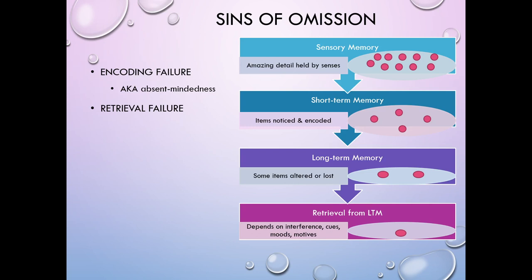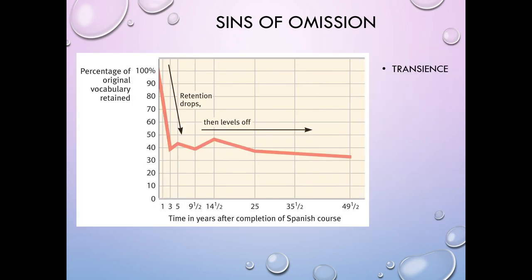So encoding failure is also known as absent-mindedness because you're just not paying attention to the information. It might be because you're distracted. It might be because the information is just not that important. Another sin of omission would be retrieval failure. This is what in psychology we literally mean by the word forgetting. Like it's in your, you did encode it. You got it into your long-term memory store, but you can't retrieve it back out. So this is what we consider true forgetting.